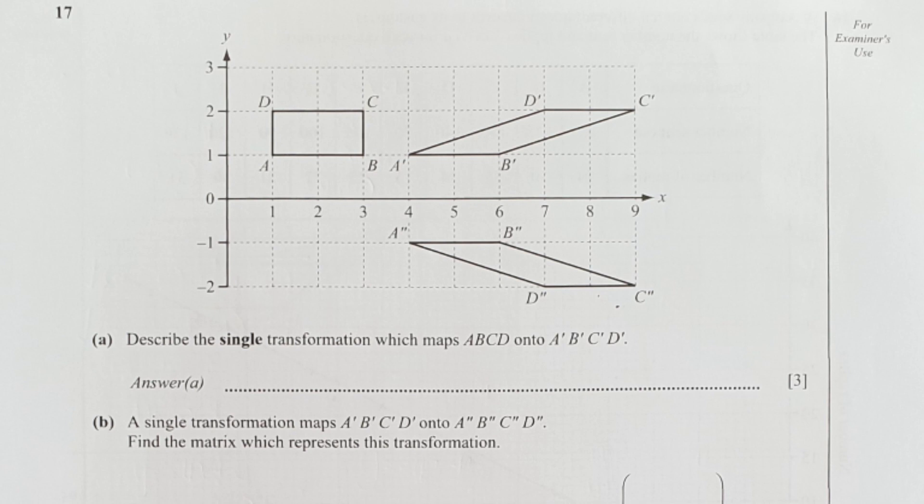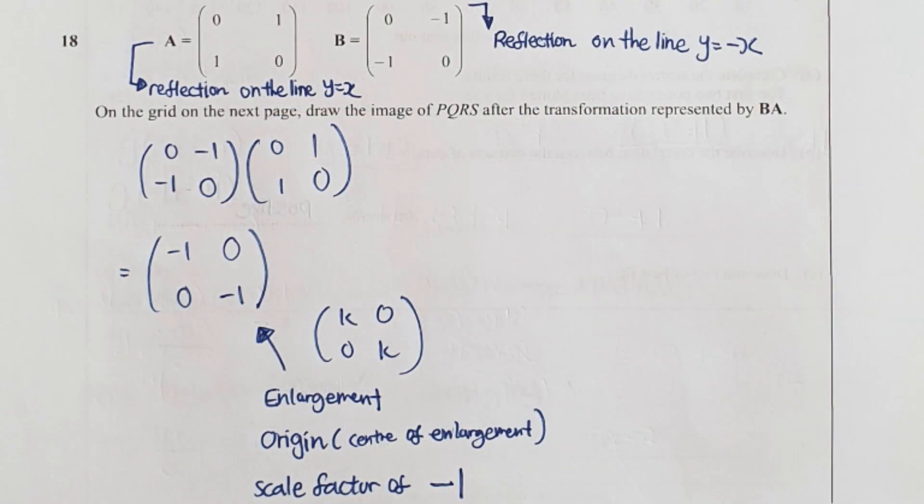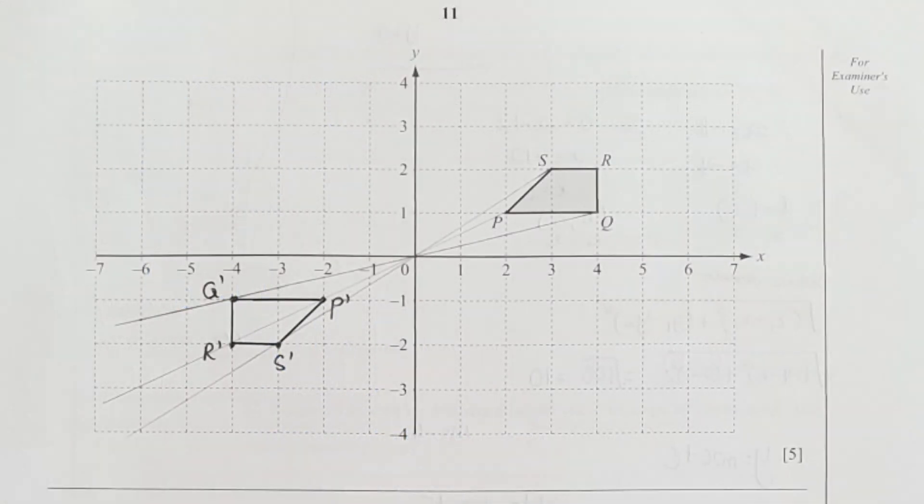Looking at question 18, on the grid of next page find the transformation represented by BA. BA, after you run the calculation you will get it as negative 1, 0, 0, negative 1. This is an enlargement from the origin with a scale factor of negative 1, which means your image of the object will be inverted. I indicated over at the graph next to it.